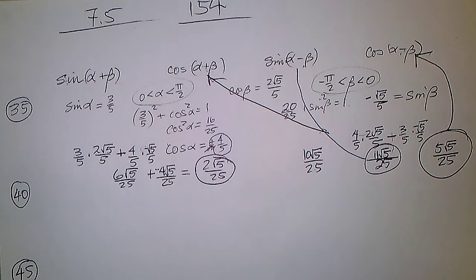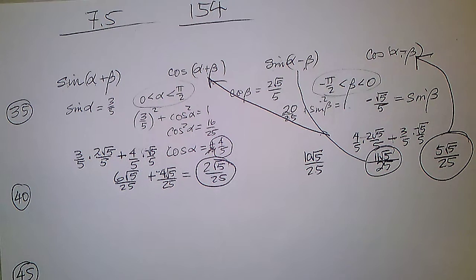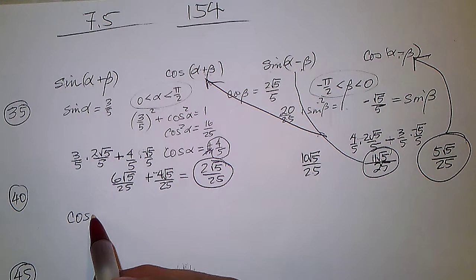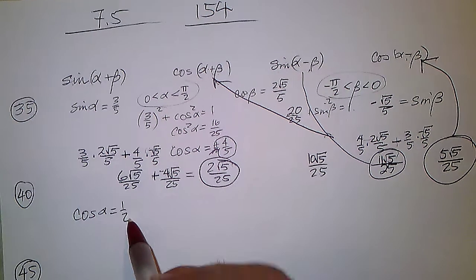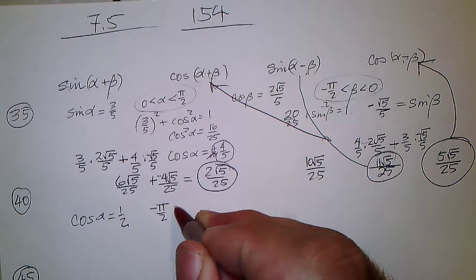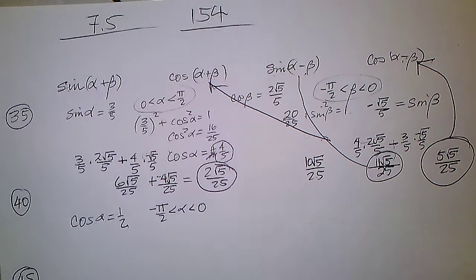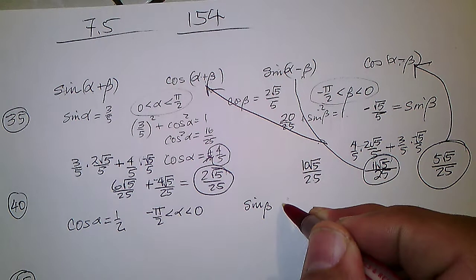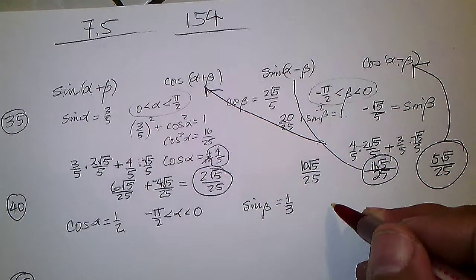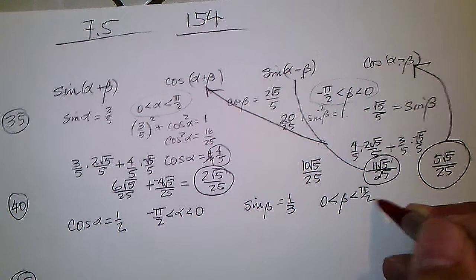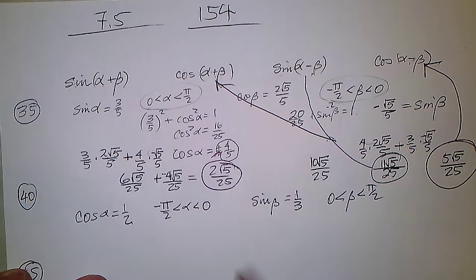That completes problem 35. Problem 40 is essentially the same thing with different quadrants and values. For problem 40, cosine of alpha is 1/2, alpha is in the fourth quadrant, and sine of beta is 1/3 in the first quadrant. Using sine squared plus cosine squared equals 1: 1/9 plus cosine squared beta equals 1, so cosine squared beta is 8/9.